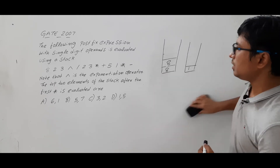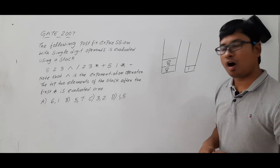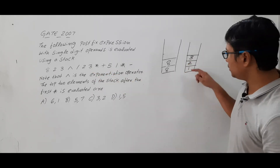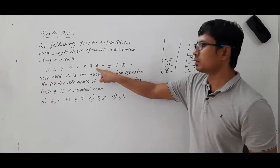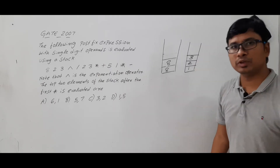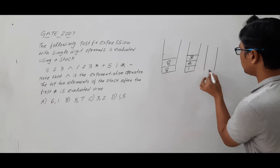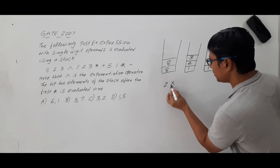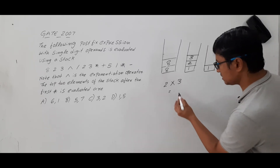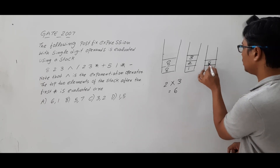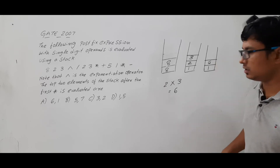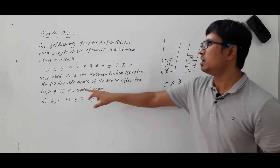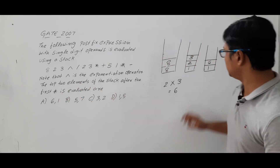Now we got 2, which is an operand, so I push it into the stack. We got 3, which is an operand, I push it into the stack. Now I have elements 1, 2, 3 in the stack. I got the multiplication operator, so I pop the top two elements — 2 and 3. I will have only 1 remaining in the stack. I perform 2 × 3 = 6 and push 6 into the stack. So now the stack contains 6 and 1. We have executed the first multiplication.